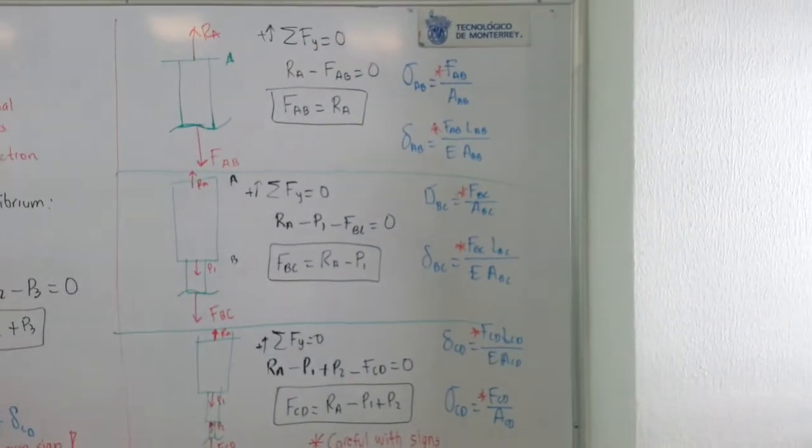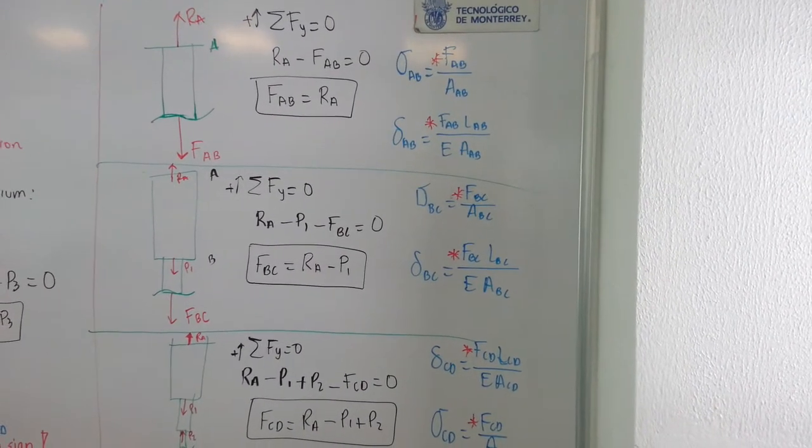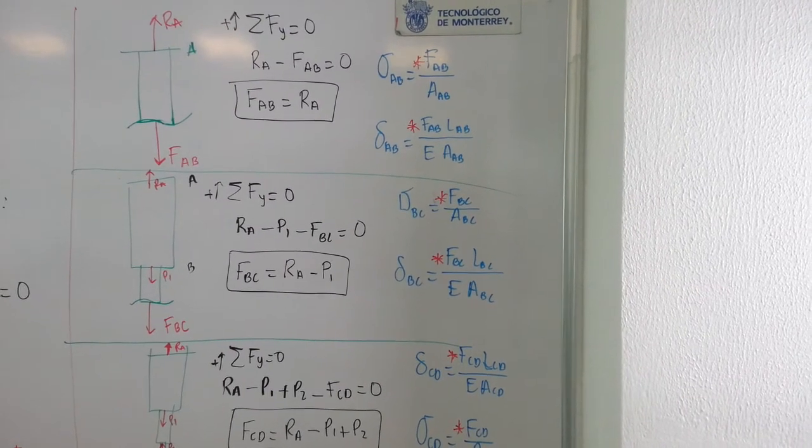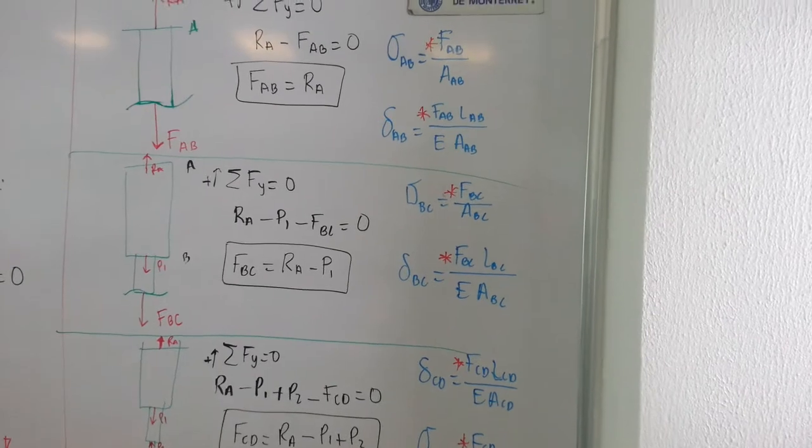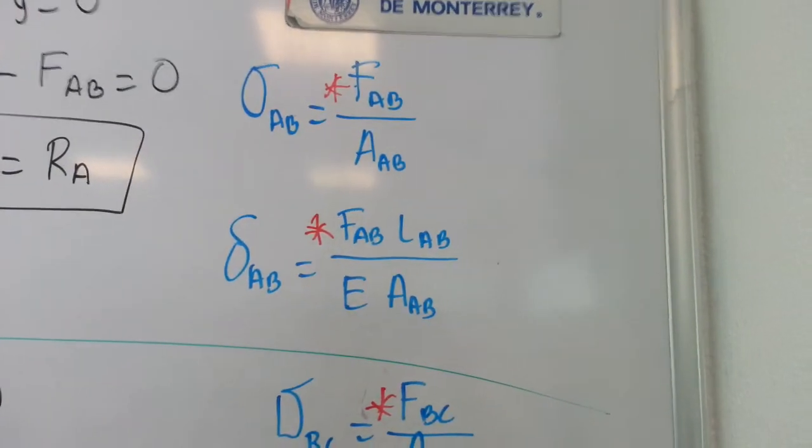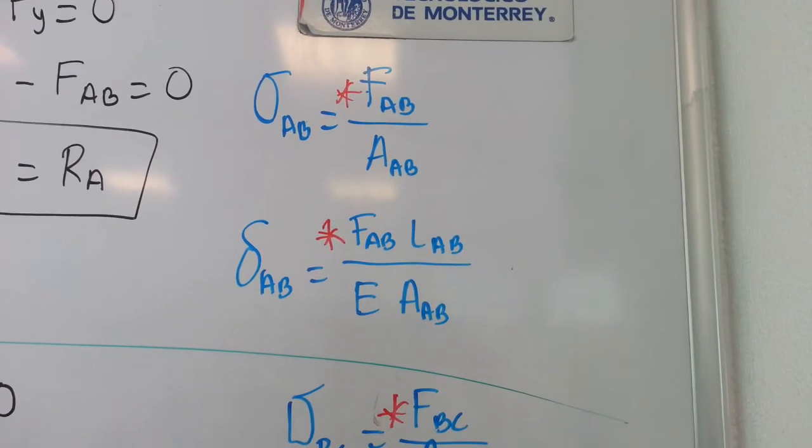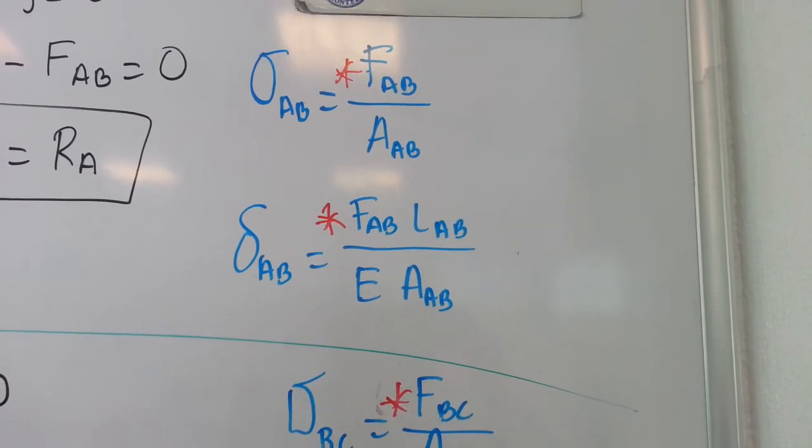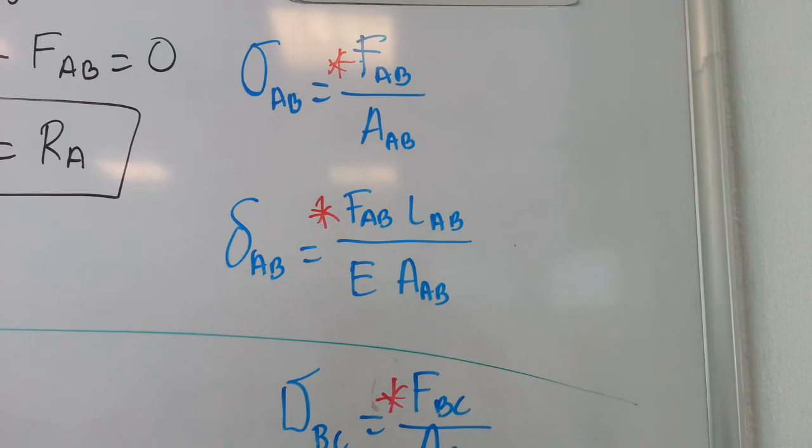And in here, we have the evaluation of the internal forces. Internal forces are needed in the calculation of the axial stresses and the deformations of each segment. And you can see that, for instance, for the segment AB, you use the internal force AB and the cross section, the area AB. And for the deformation, you use the length of the segment AB as well as the area AB.